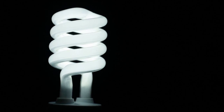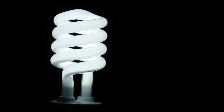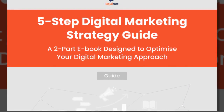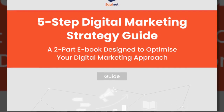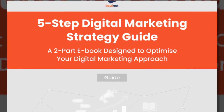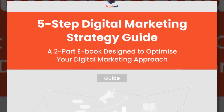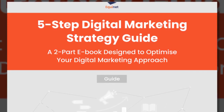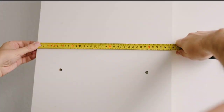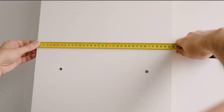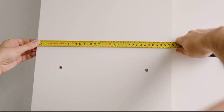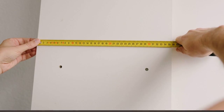Section 12: From Strategy to Implementation. Conclude the series with a step-by-step guide on translating digital marketing strategies into actionable plans. Gain insights into the implementation process, measurement metrics, and continuous improvement.